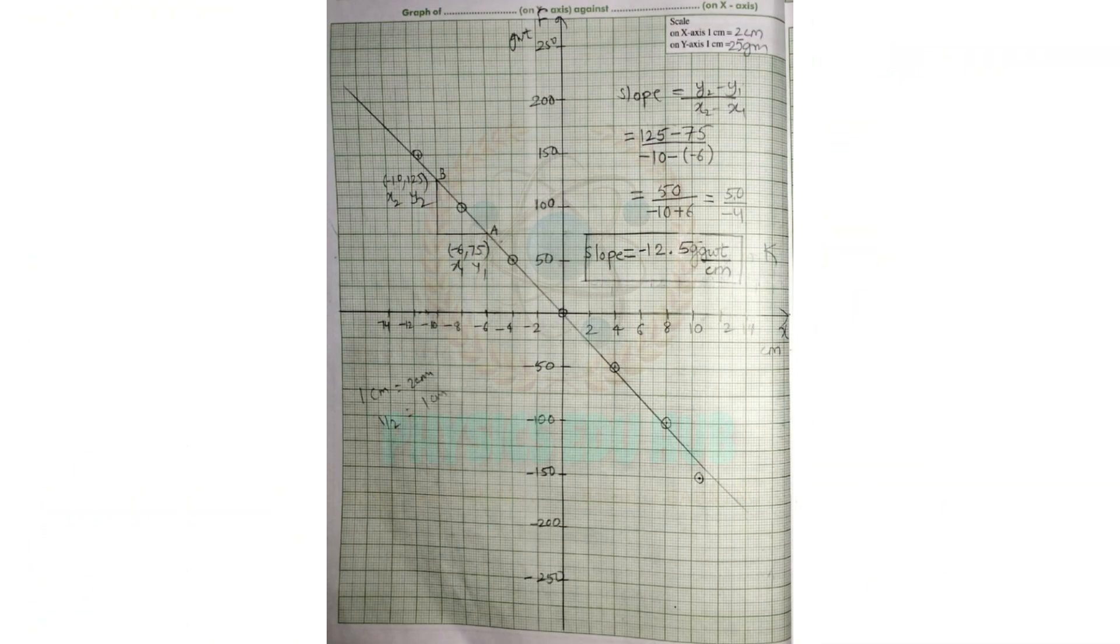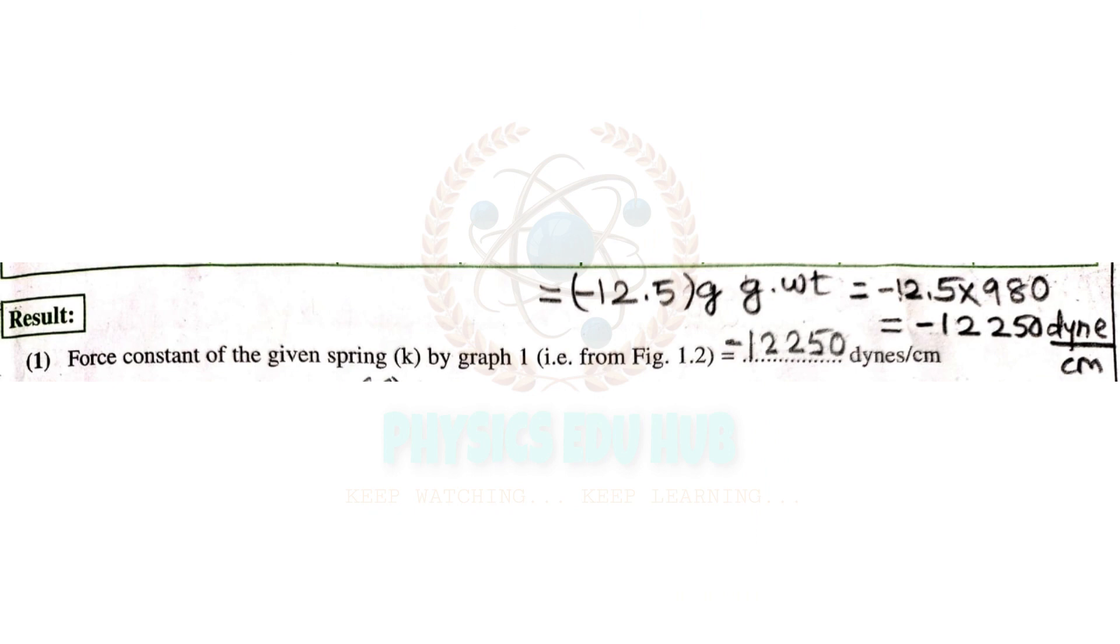Now, draw a graph of force against extension X, then find the slope of the graph as shown. After getting the slope from the graph, multiply it by 980 to get the result in dynes per centimeter.